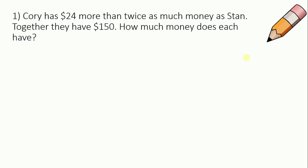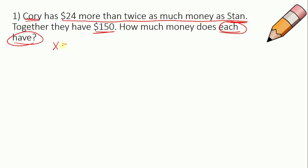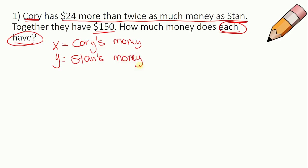Corey has $24 more than twice as much money as Stan. Together, they have $150. How much money does each have? I'm going to underline the key information. We're talking about Corey and Stan — those are our two variables. The question asks how much money does each have, so X is Corey's money and Y is Stan's money.